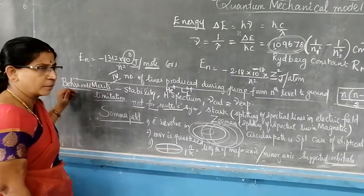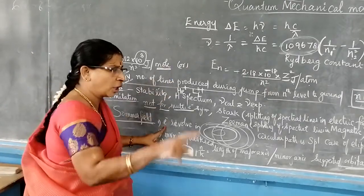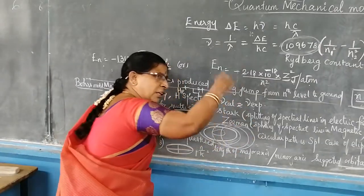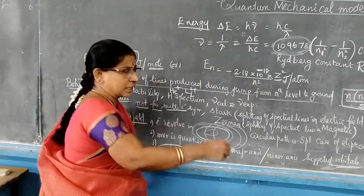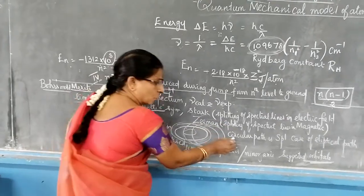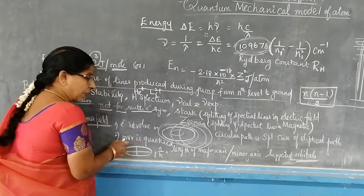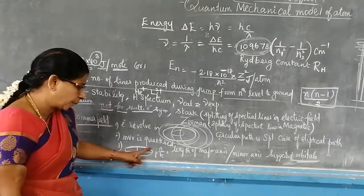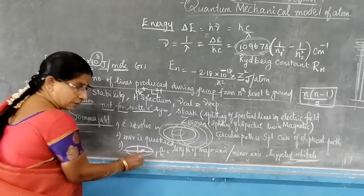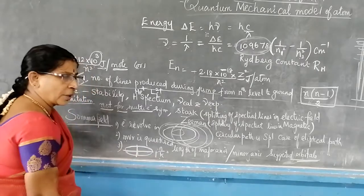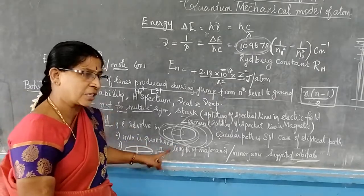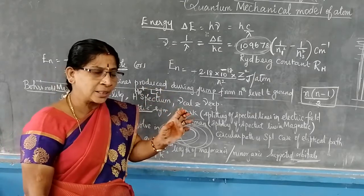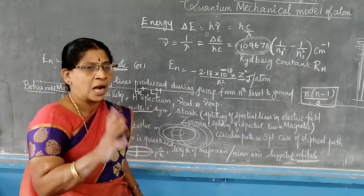Now we are coming to Sommerfeld's model and its postulates. He said electrons are not revolving in circular orbits as Bohr said; instead they follow an elliptical path. When the elliptical path extends very far beyond the nucleus, it automatically becomes a circle — so circular path is a special case of elliptical path. He also says angular momentum is quantized. In the elliptical path there is a major axis and a minor axis. N is the length of the major axis and K is the length of the minor axis. This ratio suggested a new term called orbitals. In the next video we will see completely about orbitals and quantum numbers.